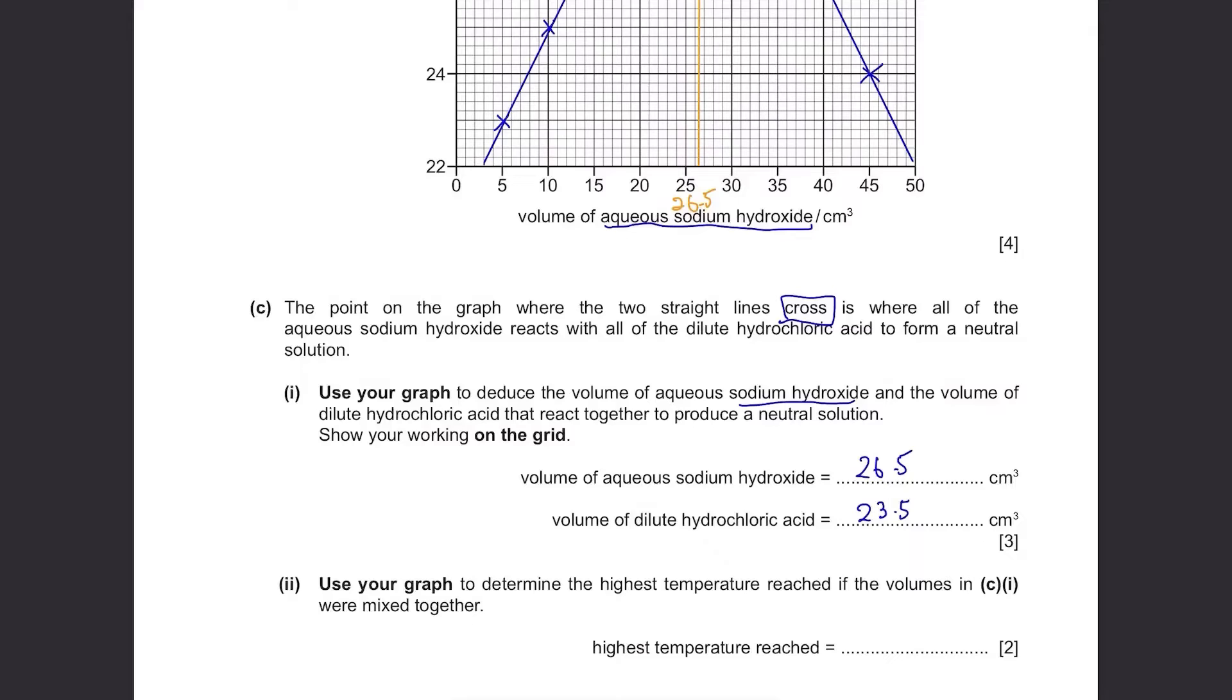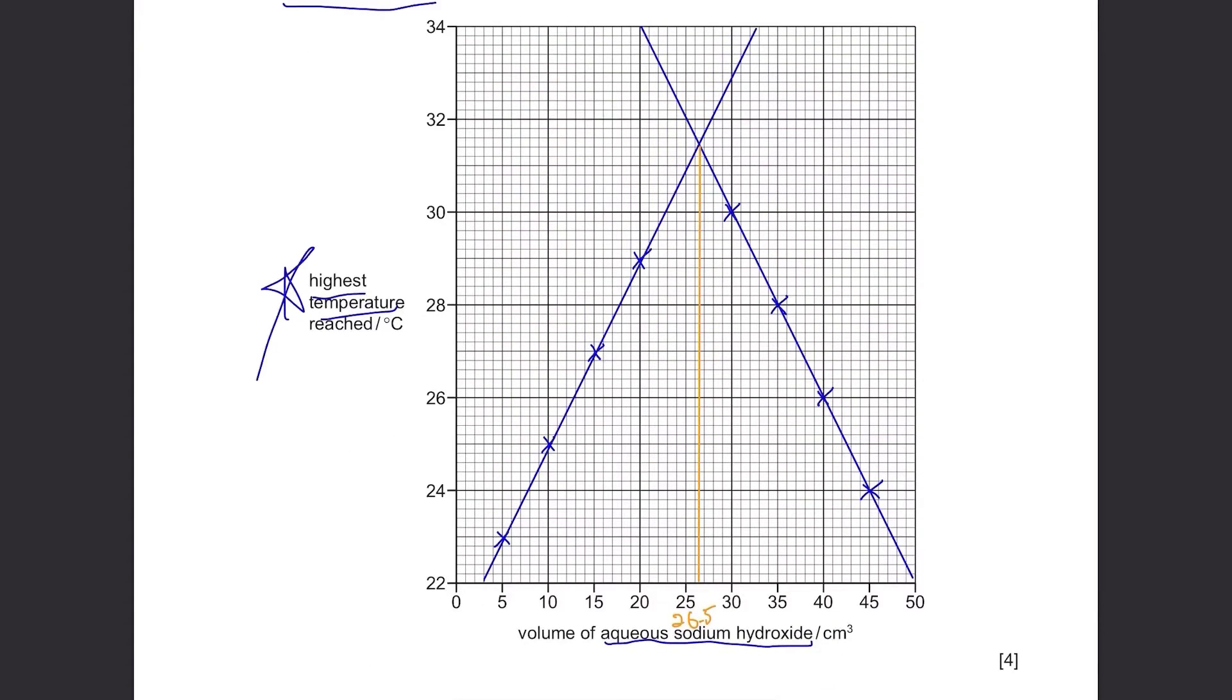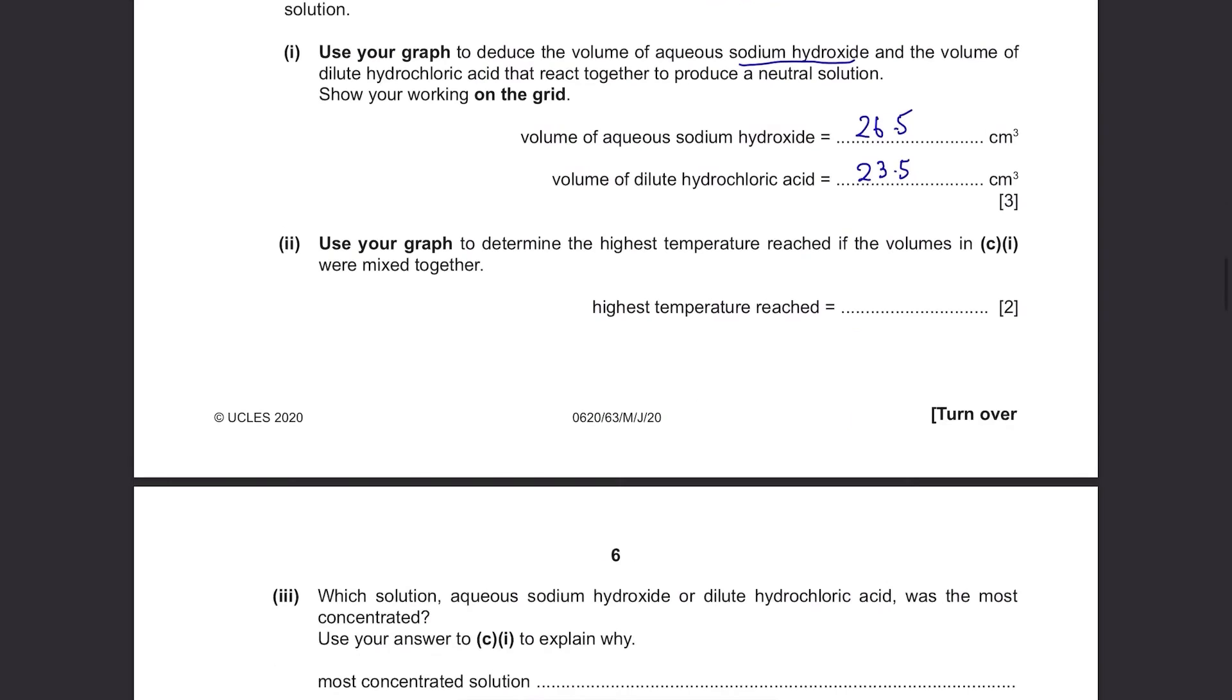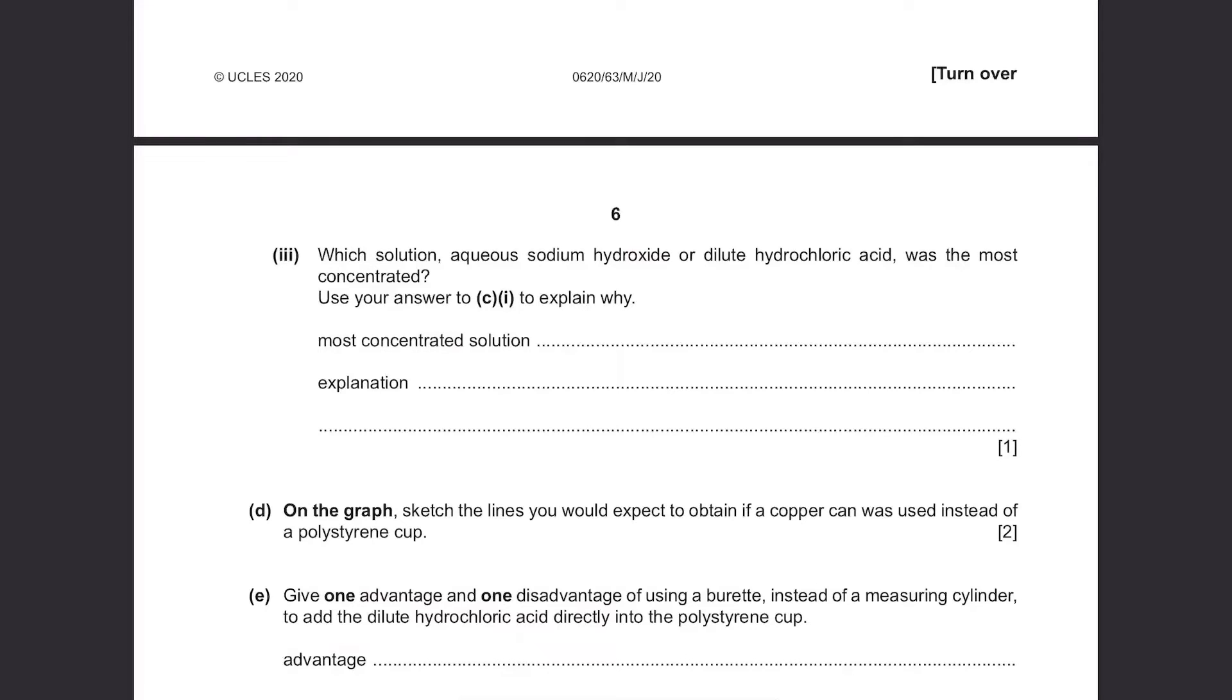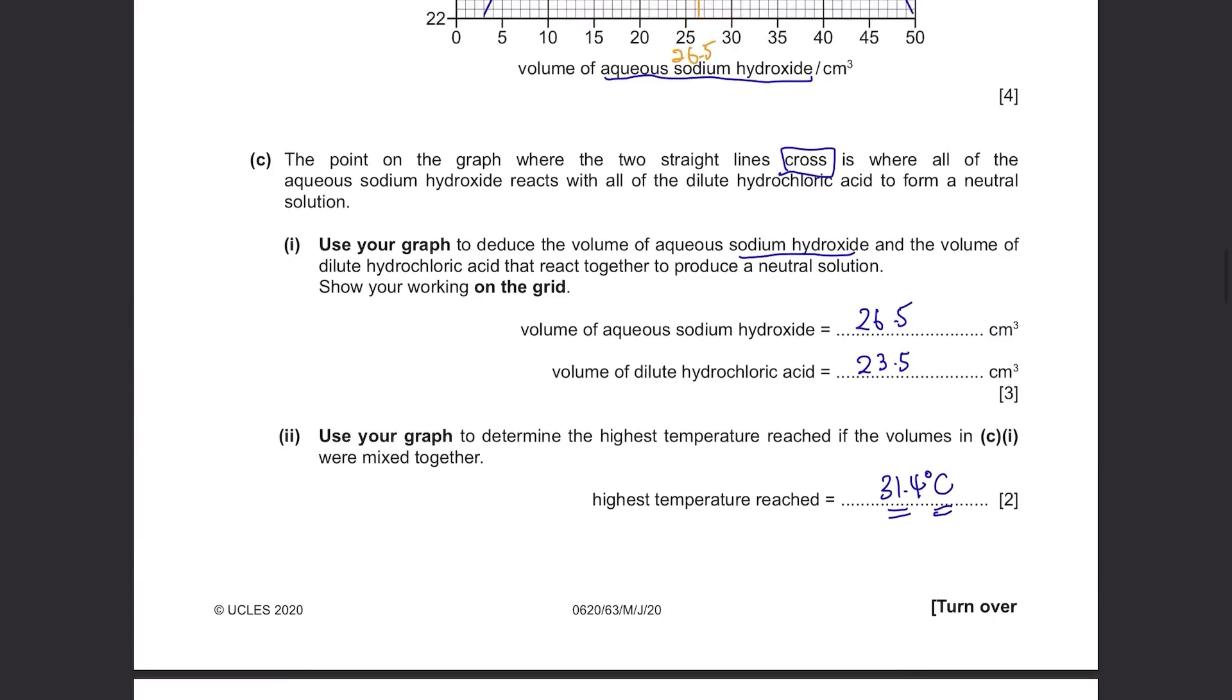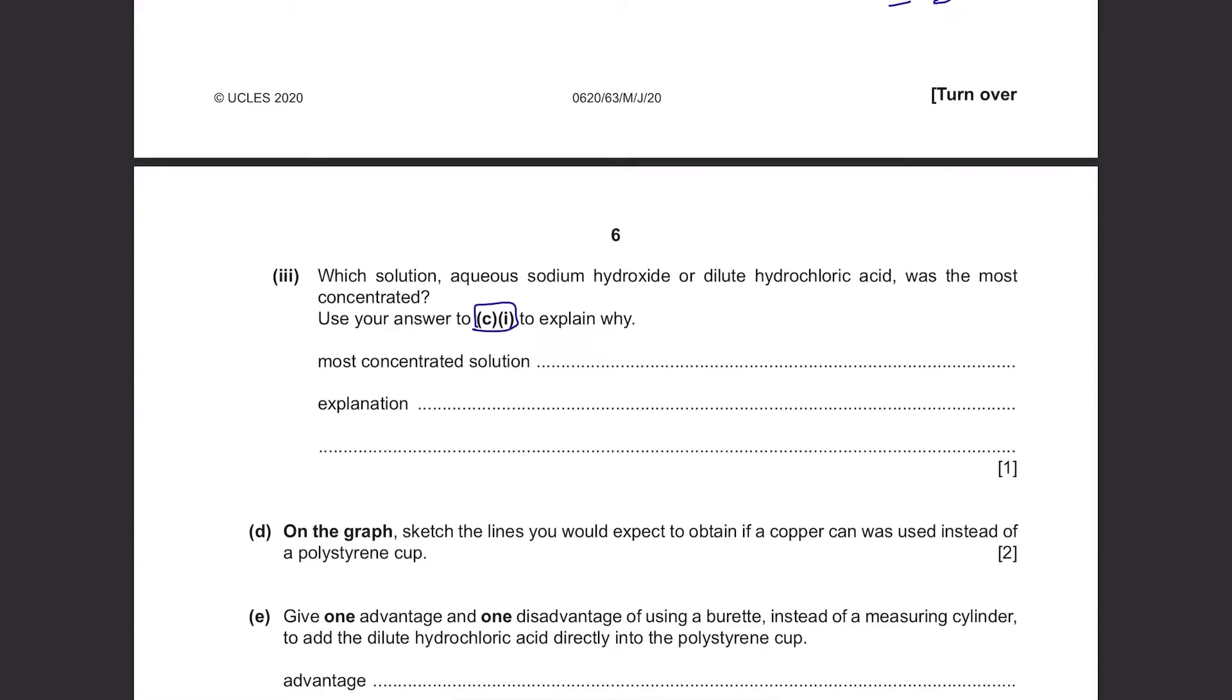Use your graph to determine the highest temperature reached if the volumes in part C1 were mixed together. We just have to read the y-coordinate of the intersection. It's around 31.4 degrees Celsius. Don't forget the unit. Which solution was the most concentrated? Since the volume of dilute hydrochloric acid was lower than sodium hydroxide, less volume of hydrochloric acid is required to neutralize it, which brings us to the point that hydrochloric acid was more concentrated. The answer is dilute hydrochloric acid because less volume was used compared to sodium hydroxide.